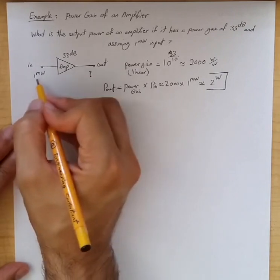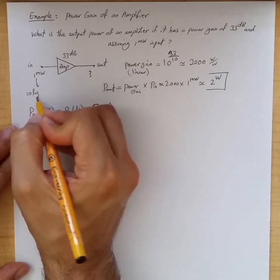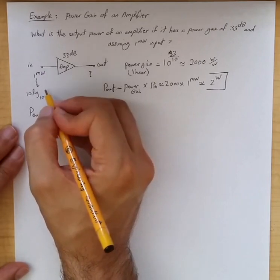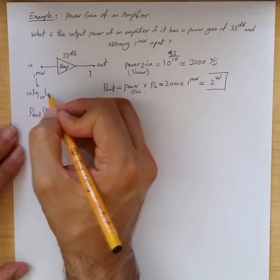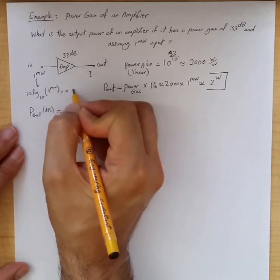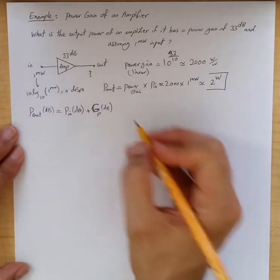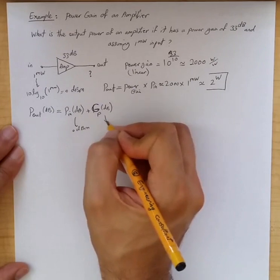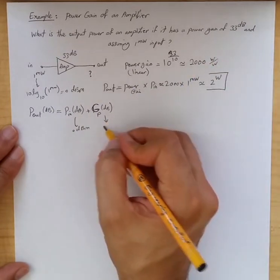The input power, you can just get it by 10 log 10 of 1 mW. You get it in dBm, so it will be 1 mW, which is 0 dBm. So that is 0 dBm. And the gain as given is 33 dB.